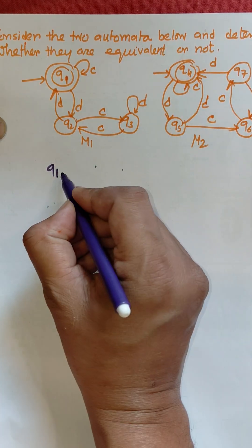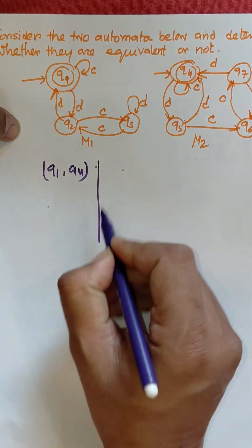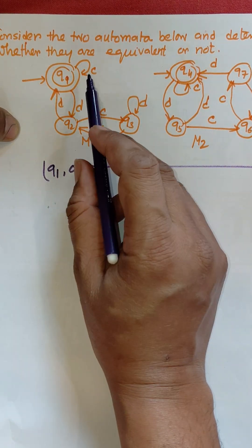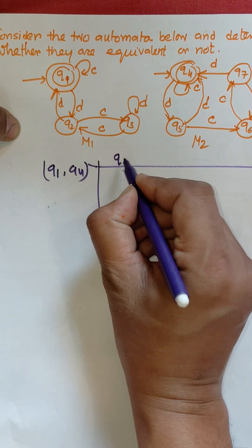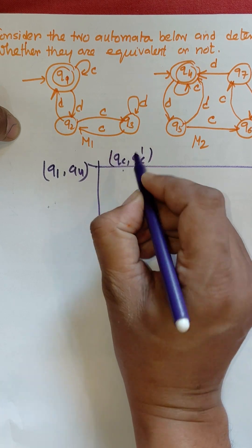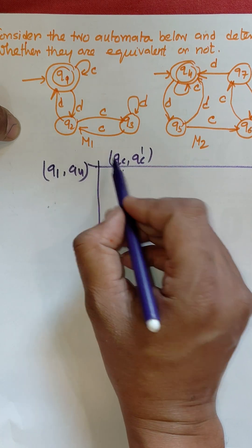First of all, start with the initial state, then we need to apply inputs. Here c, that is one is qc and another is qc dash. Consider this one is for automata one and this one is dash for automata two. Another is qd, qd dash.